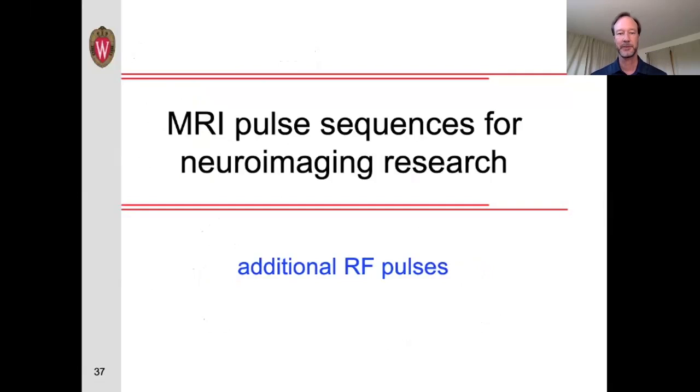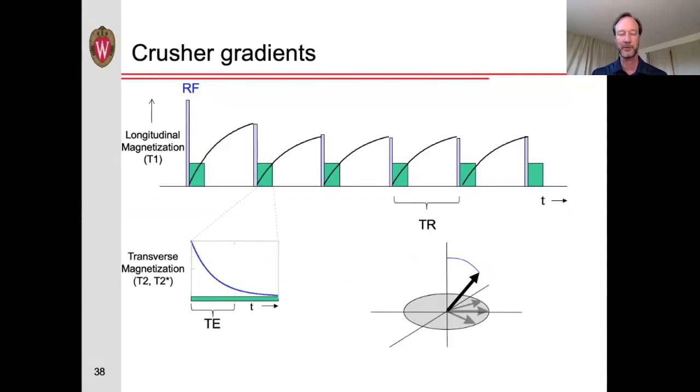Hello. In this lecture, which is part of the series on MRI pulse sequences for neuroimaging research, we'll be talking about a few additional RF pulses. First, crusher gradients.